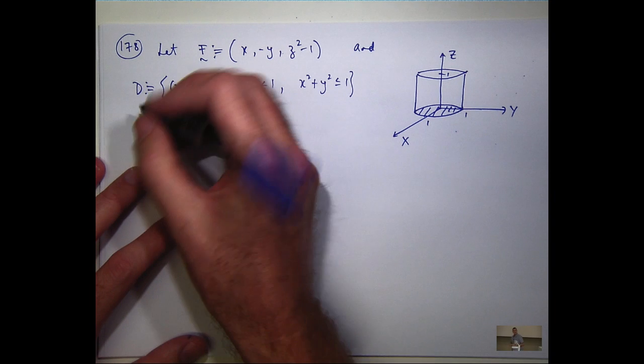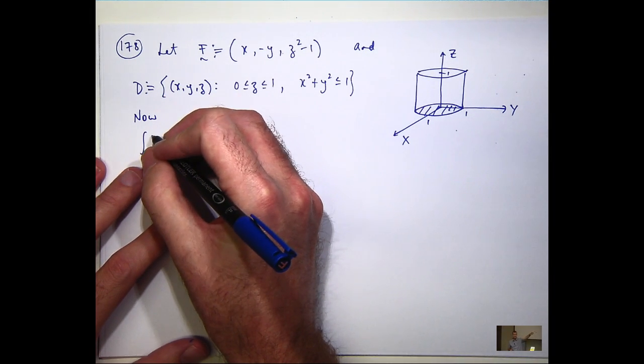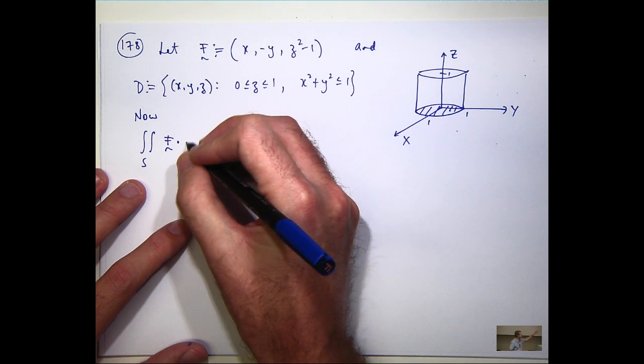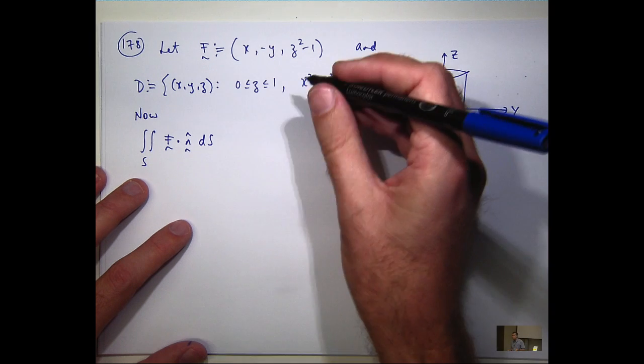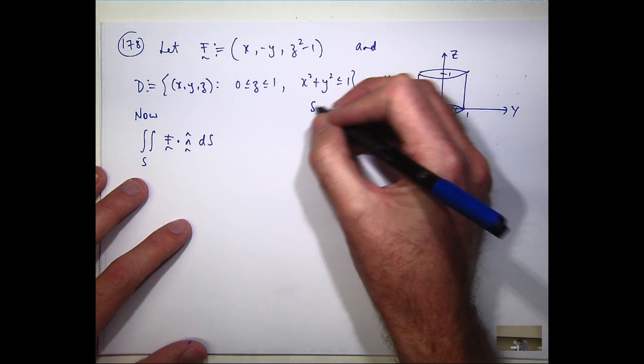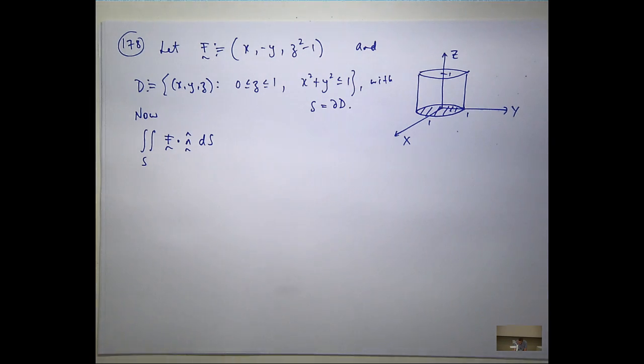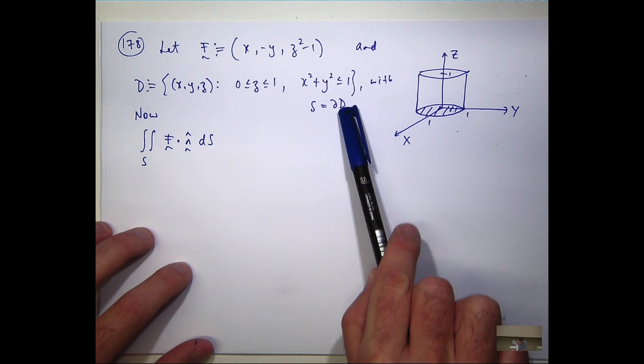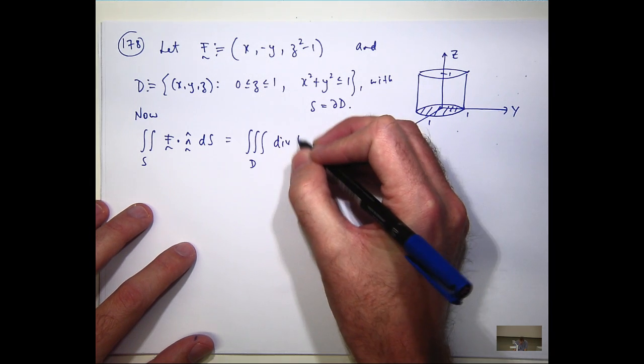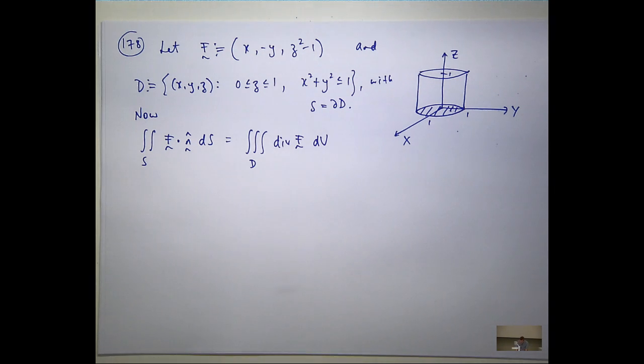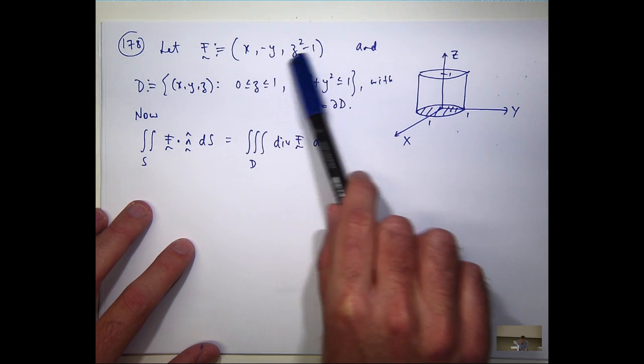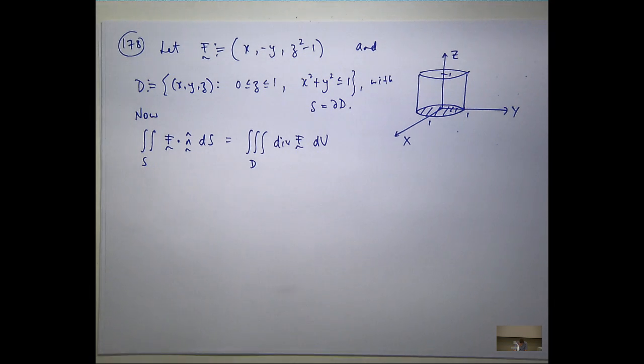So if I wanted to evaluate the following surface integral, just so S is just sort of the boundary. By this sort of curly D, I mean the boundary of the set D. It's not a partial derivative or anything like that. Now, by Gauss's divergence theorem, I'm just getting the following. So what I want to do, now remember this is a triple integral, I want to take the divergence of my vector field and then just set up my triple integral.